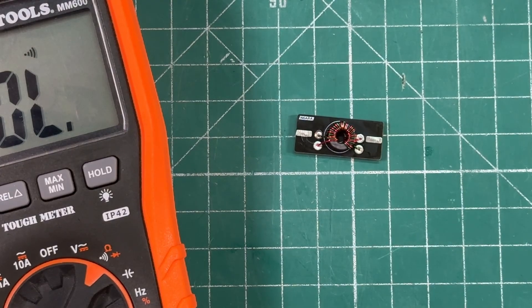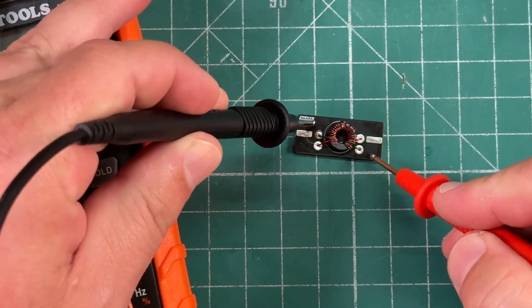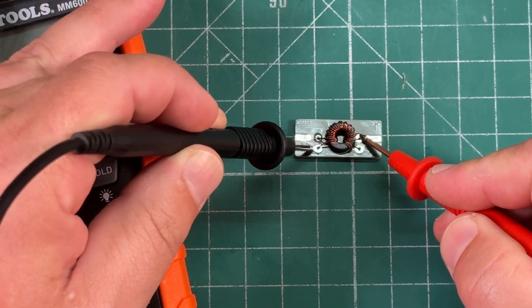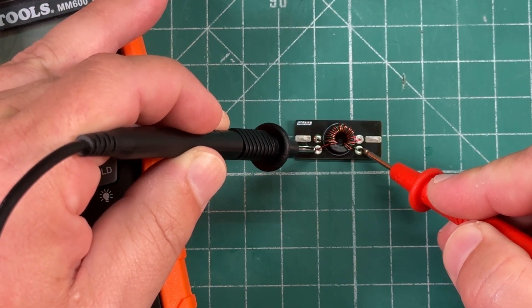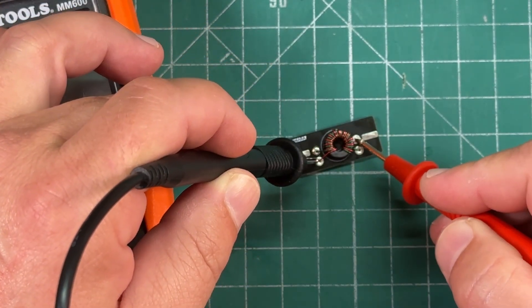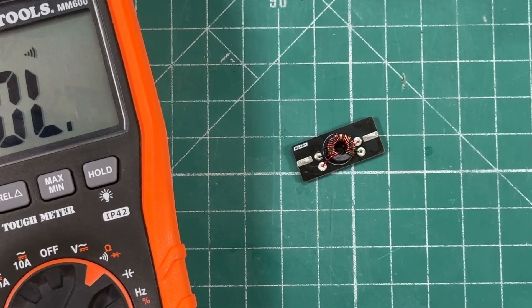Now we want to go ahead and check for continuity. So we're going to take the top left and the bottom right, and that is good. And then the top right and the bottom left, and that's good. Make sure nothing else shorts out. We did it right.